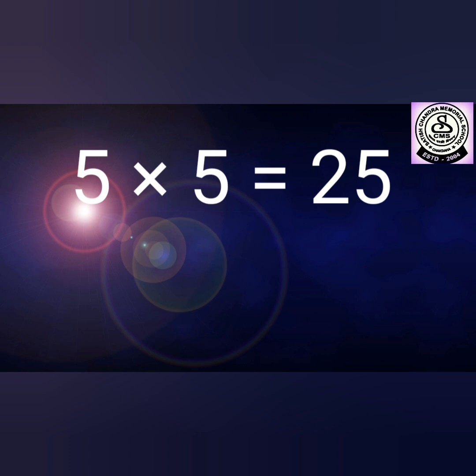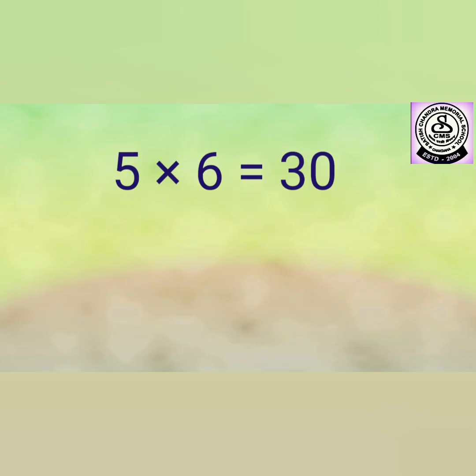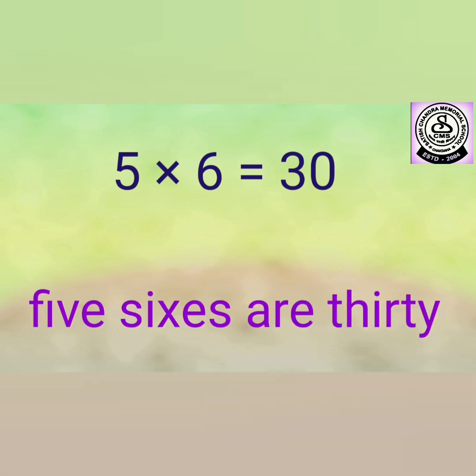Five fives are twenty-five. Five fives are twenty-five. Don't say it incorrectly — five fives are twenty-five. Five sixes are thirty. Five sixes are thirty. Five sixes are thirty.